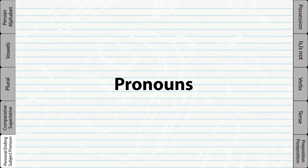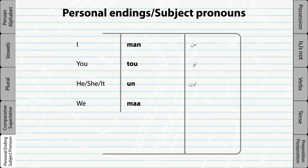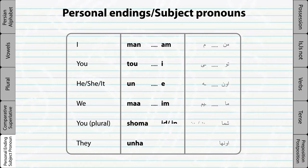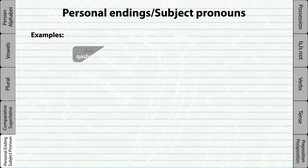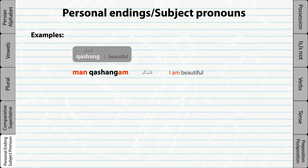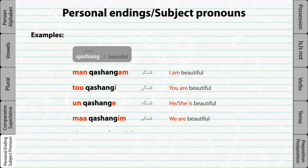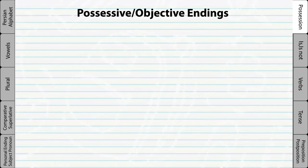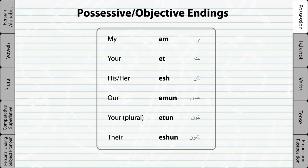Pronouns. These are the subject pronouns in Persian. When we use the subject pronoun, we should also use the personal ending for the pronoun, and each pronoun has a unique personal ending. These are the possessive endings in the Persian language. They are attached to the end of a noun to show possession.